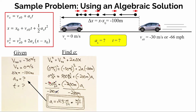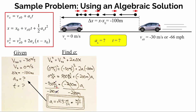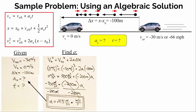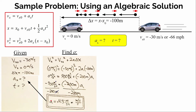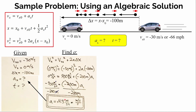So a = negative 900 m²/s² divided by negative 200 m. Negative 900 divided by negative 200 is positive 4.5. For the units: m²/s² divided by m cancels one meter, leaving m/s² — the correct unit for acceleration. So the car changes its velocity by 4.5 meters per second each and every second while slowing down, assuming uniform (constant) acceleration.